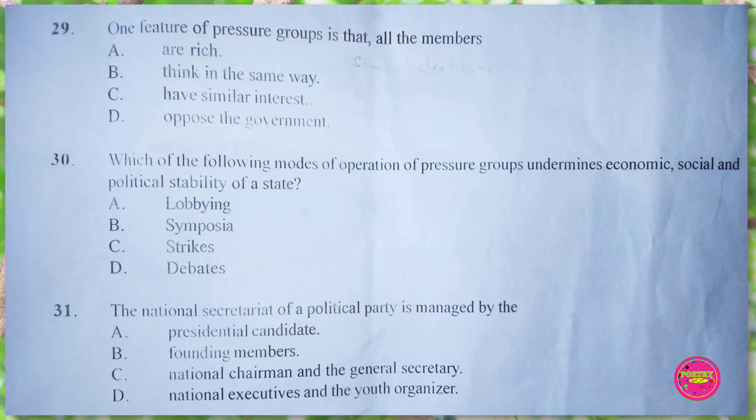Question 31. The national secretariat of a political party is managed by their: A. presidential candidates, B. founding members, C. national chairman and the general secretary, D. national executives and the youth organiser. The correct answer is C. national chairman and the general secretary.